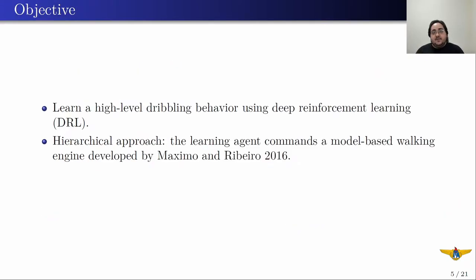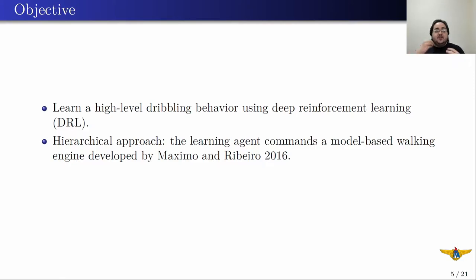The objective of this research is to learn a high-level dribbling behavior using deep reinforcement learning, or DRL, and we used a hierarchical approach. Since learning to control the joints directly to make a dribble is very hard, we tried to make the learning agent command a model-based walking engine which was previously developed in our lab using control theory.